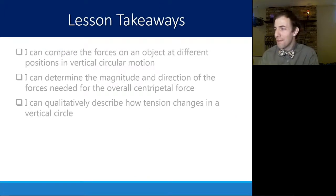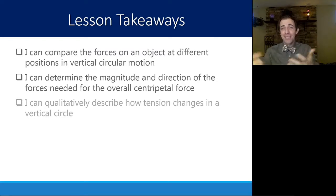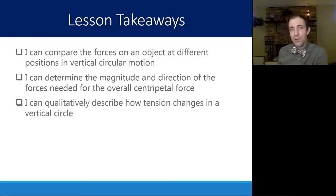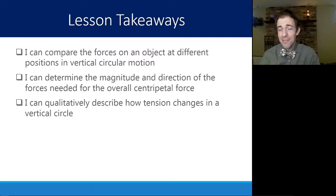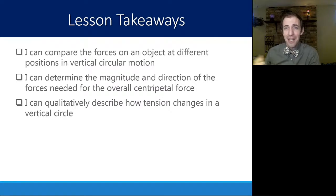In summary, you should be able to compare forces at different positions in vertical circular motion, determine the magnitude and direction of forces needed for an overall centripetal force, and qualitatively describe how tension changes. A common exam mistake is mixing up top and bottom — remember that tension at the bottom is always larger than at the top when swinging an object in a vertical circle with a string.